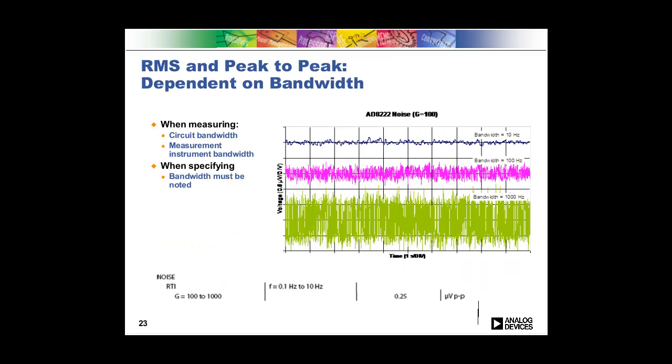So if you have a signal whose average is zero, then the RMS and the standard deviation are exactly the same. If you had a signal that did not have a mean of zero, say some sort of signal that you're generating, then the RMS and the standard deviation are not the same. But for noise, they are the same. Now, one thing to note when you're using RMS or peak-to-peak numbers is that these numbers vary quite a bit on bandwidth. So what I did is I went into the lab and I took one of our instrumentation amplifier parts, the AD8222. And I put it in a specific gain, and then I measured that part at that gain at three different bandwidths.